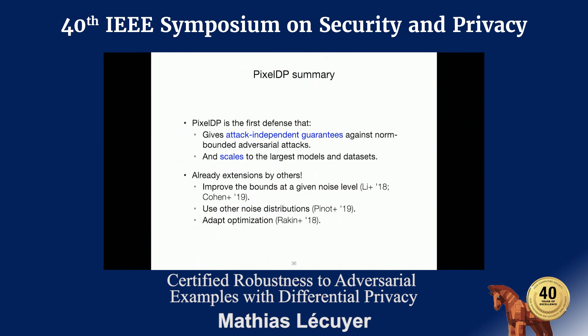Question: does this also prevent model inversion attacks, since differential privacy is used during training? The answer as presented is no — there's no formal guarantee on the trained model. It might be possible to adapt it to get some guarantees, but they would not be very good; it's clearly not the best way to achieve differential privacy at learning time. The guarantees here are purely at prediction time — we do train with noise to get good predictions, but not in a way that gives differential privacy.